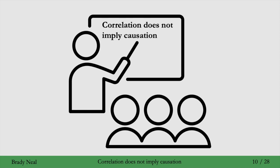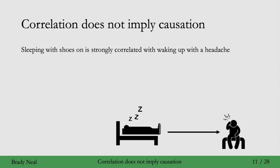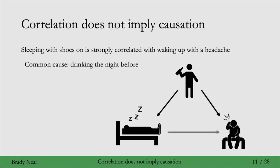You've probably heard this many times before. And for machine learning people, this is: prediction does not imply causation. The example here is that say you are looking at data of people who sleep with their shoes on and wake up with headaches. It turns out that most people who sleep with their shoes on wake up with headaches, and most people who don't sleep with their shoes on don't wake up with headaches. The two are strongly correlated. You might think you probably shouldn't sleep with your shoes on because it causes a headache. But what if in your data you also have information that most of the people who were going to sleep with their shoes on were also drinking pretty heavily the night before? And those same people were the ones waking up with a headache.